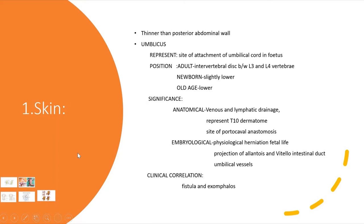The skin of the anterior abdominal wall is thinner than that of the posterior abdominal wall. A very important feature present here is the umbilicus, which represents the site of attachment of the umbilical cord in the fetus — the connection between the mother and fetus through which nutrients are exchanged and fetal excreta are carried out, essentially maintaining fetal metabolism.